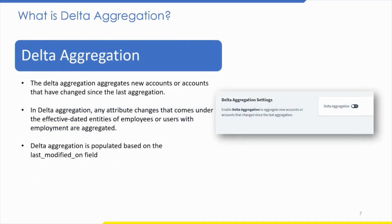Let us understand Delta Aggregation. SuccessFactors supports Delta aggregation for accounts. Delta Aggregation aggregates new accounts or accounts that have changed since the last aggregation. Any attribute change under effective date entities of employees or users with employment are aggregated. The Delta for SuccessFactors is populated based on the last-modified-on field used in the SAP SuccessFactors Employee Central compound employee API. Delta Aggregation can capture changes for the last 90 days — any data change prior to 90 days of the last successful aggregation is not captured, and a full aggregation is required. If there are configuration changes, run a full account aggregation before running Delta Aggregation.